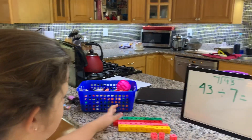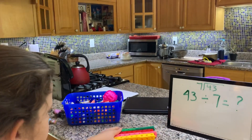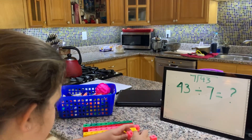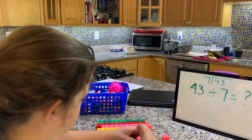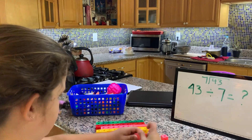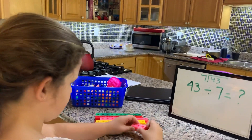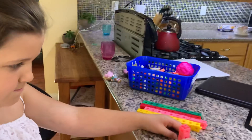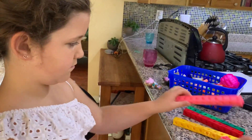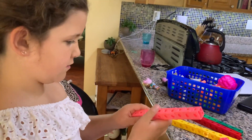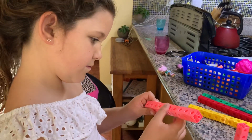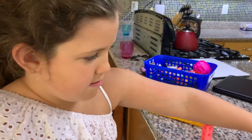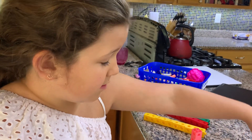So now that you have four tens and three ones and they're all the same size, why don't you go ahead and show me how many groups of seven you can fit in forty-three. You can break apart those tens or you can build another group of seven any way you want. So first start by seeing how many groups of seven you can fit in forty-three. One, two... one group of seven?